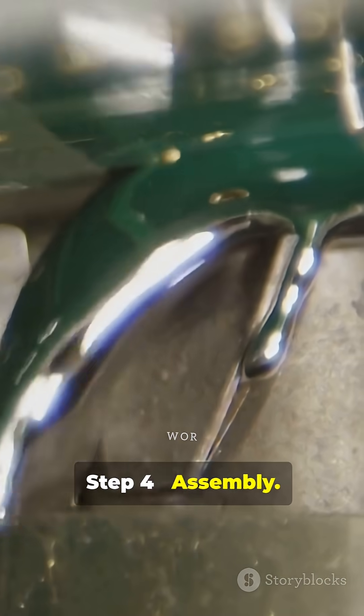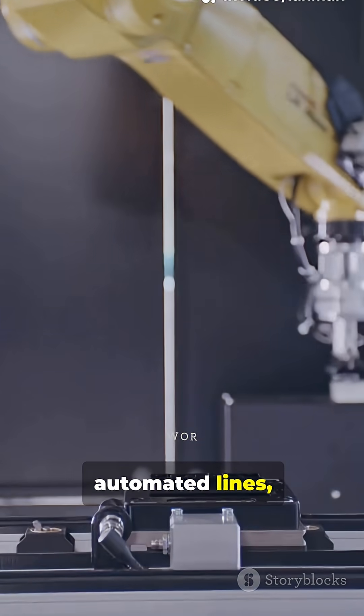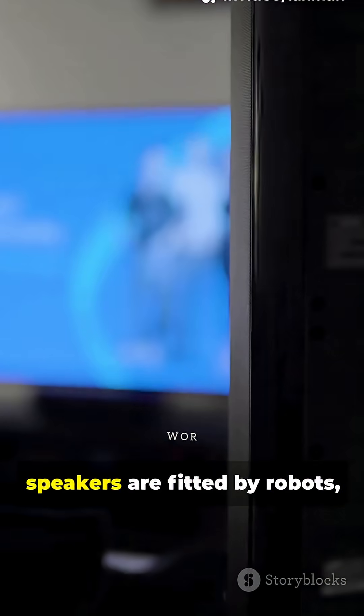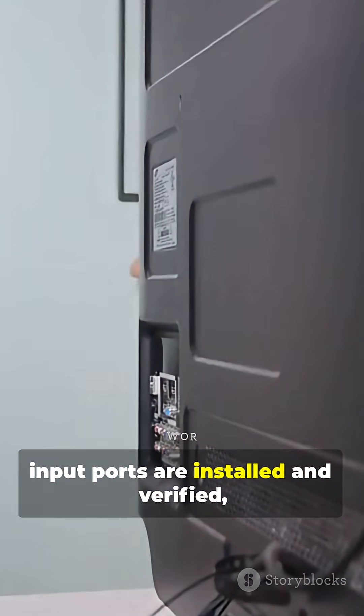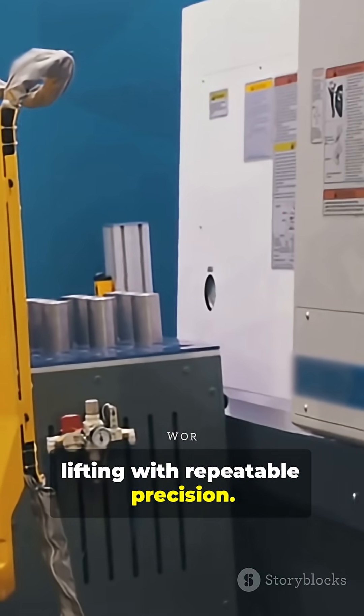Step 4. Assembly. The screen is snapped or screwed into the chassis on automated lines, frames and brackets lock everything in place, speakers are fitted by robots, input ports are installed and verified, and robots do the heavy lifting with repeatable precision.